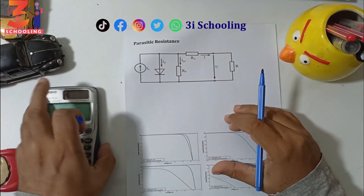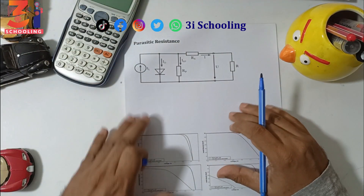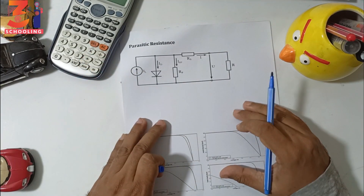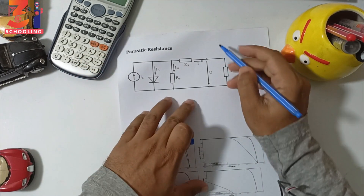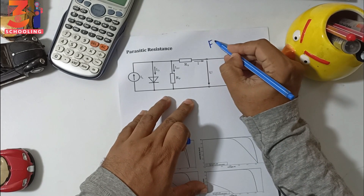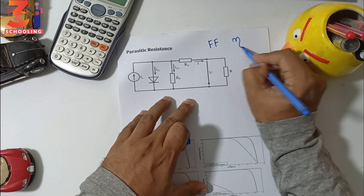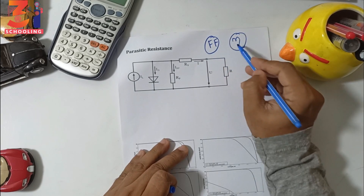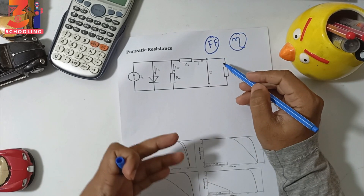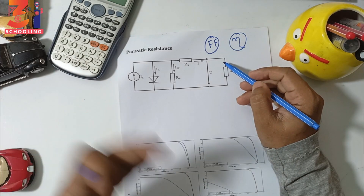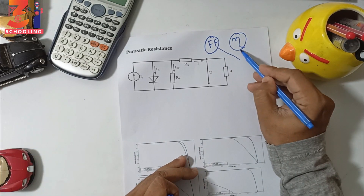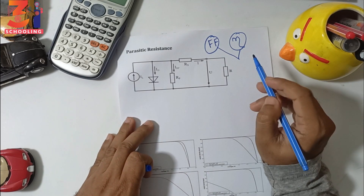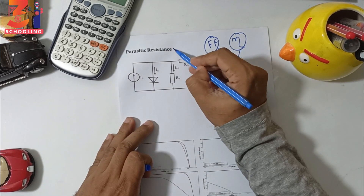Solar cell efficiency — the solar cell fill factor and efficiency are very important parameters. This fill factor is very important in solar cell characteristics.